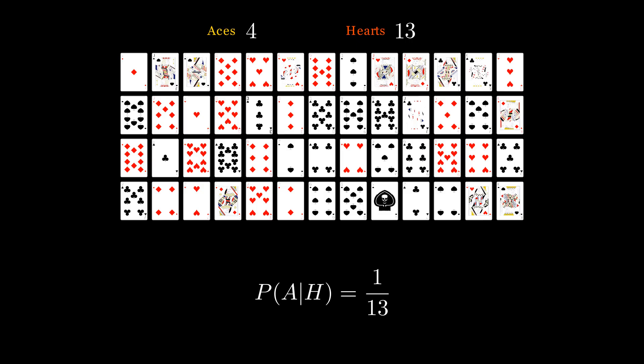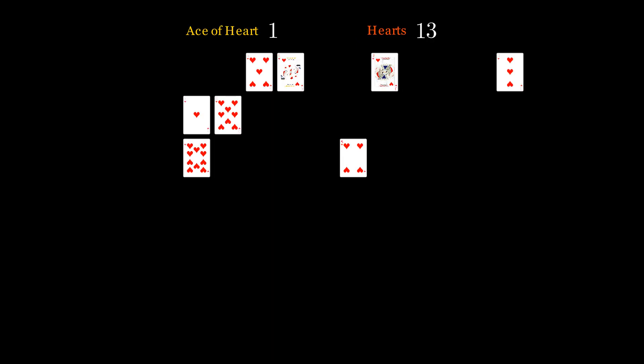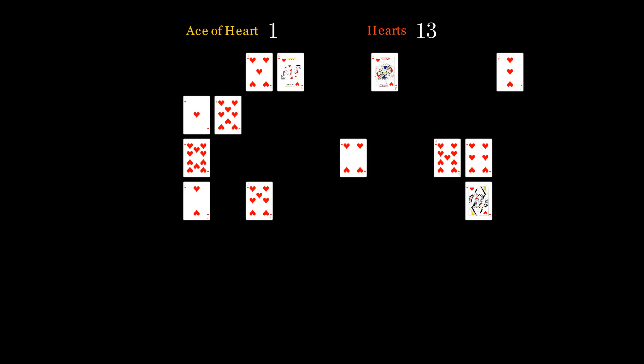And this makes sense as per our intuition because when a heart has already been drawn, the sample space is reduced to 13 cards. And out of these 13 cards, there is only one ace card.